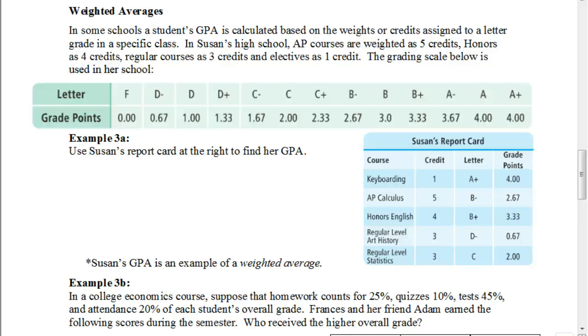So we're going to use Susan's report card at the right to find her GPA. So what we have here is that each of these classes are given a different weight or different credit based on their level of difficulty. So an easier class, like keyboarding, that may not meet every day and obviously is not going to be as difficult as AP calculus, is going to be given a basic weight of just one, or credit of one.